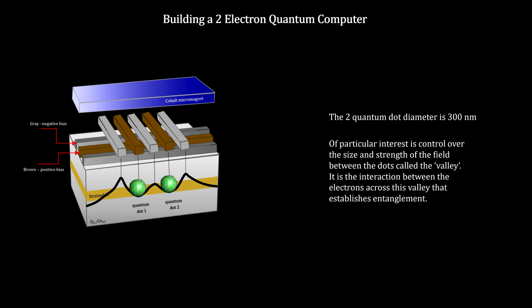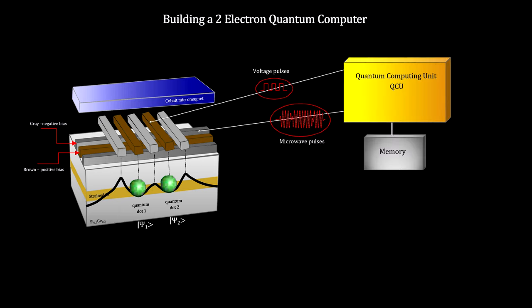With this configuration, we can introduce two electrons. The states of these electrons are controlled by microwave and voltage pulses, applied to the gates by the quantum computing unit. For example, electron spin can be aligned with a magnetic field in the up or down direction. And the two electrons can also be put into an entangled state by managed exchange interactions across the Coulomb barrier between them.